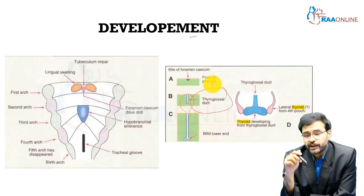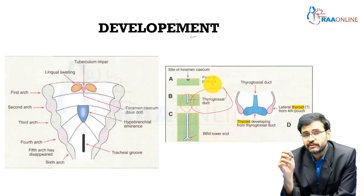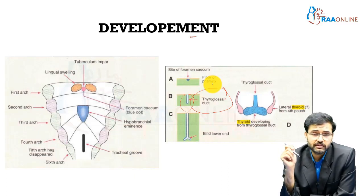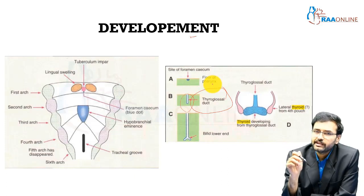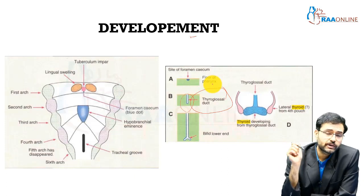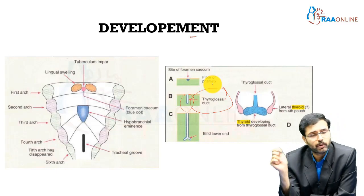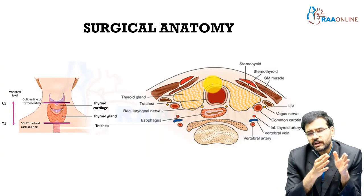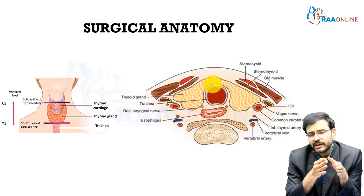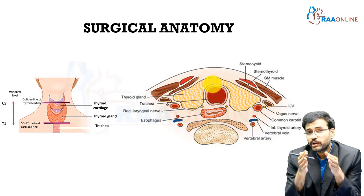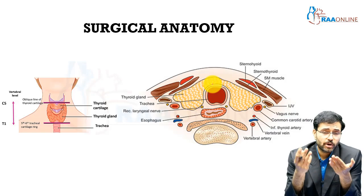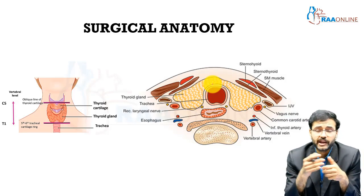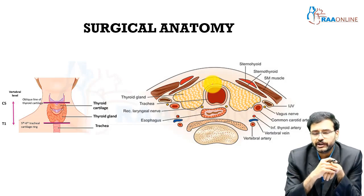The thyroid gland has certain specialized cells called parafollicular C cells. These parafollicular C cells are of neural crest origin and they develop from the ultimobranchial body. With this basic understanding of how the thyroid gland develops, let us now go on to the surgical anatomy of the thyroid gland.